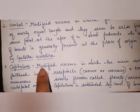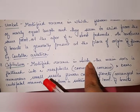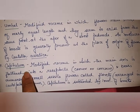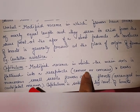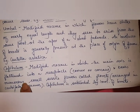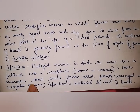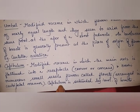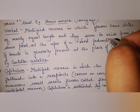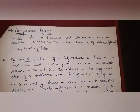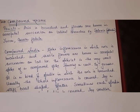Next is capitulum: a modified raceme in which the main axis is flattened into a receptacle — convex or concave — and bears numerous small sessile flowers called florets arranged in centripetal manner. Capitulum is subtended by an involucre of bracts. It is found in the family Asteraceae: aster, dahlia, sunflower, and Helianthus.